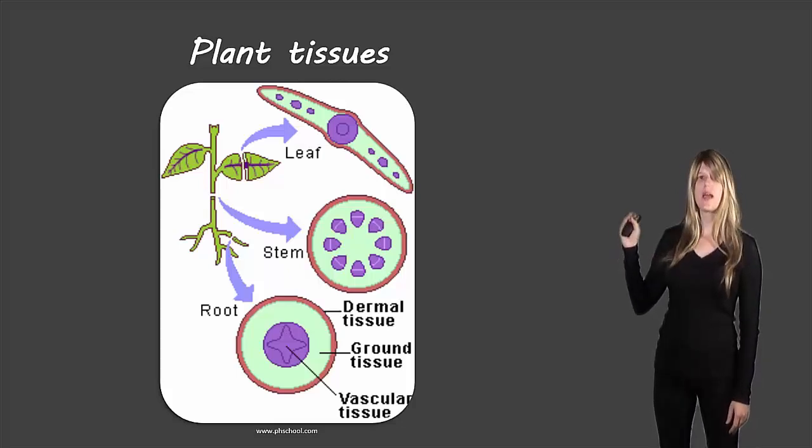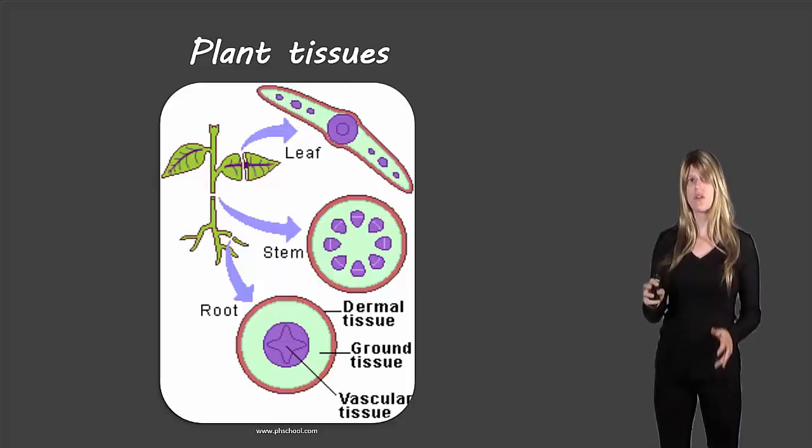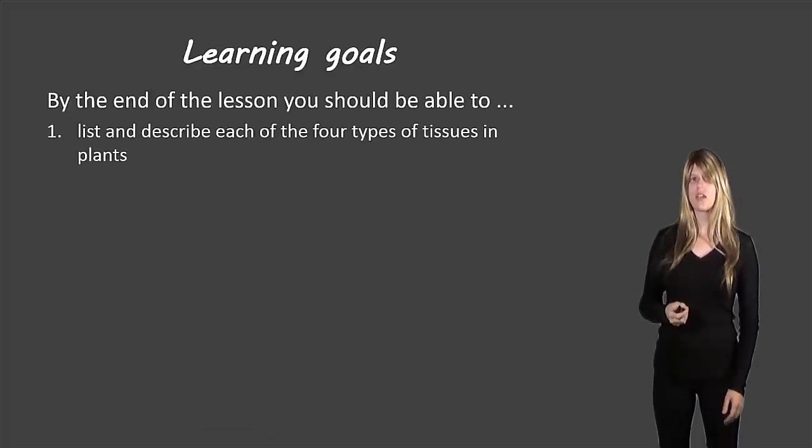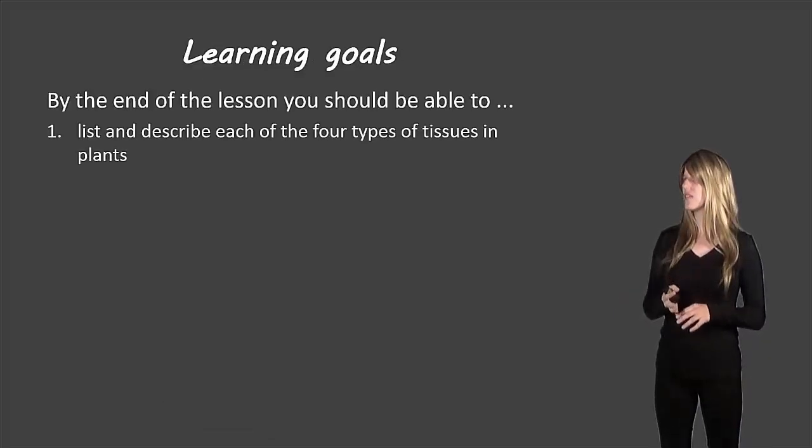In the roots, the stem, and the leaf they have slightly different organizations. We're not going to talk too much about the organization, but we are going to talk about what each of those different types of tissues are and why they're important. Let's take a look at our learning goals. You should be able to list and describe each of the four types of tissues in plants.